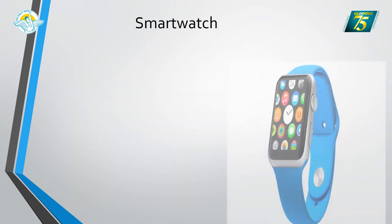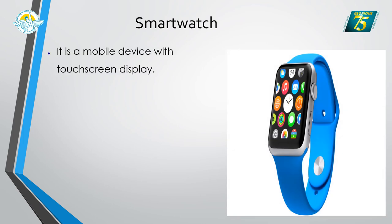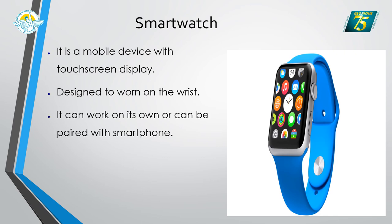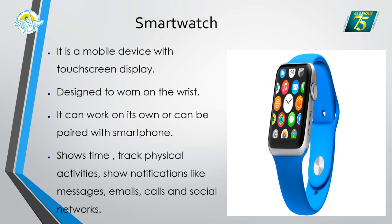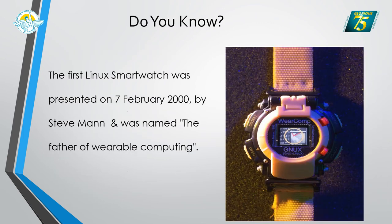Next is the smartwatch. It is a mobile device with a touchscreen display designed to be worn on the wrist. It can work on its own or be paired with a smartphone. It shows time, tracks physical activities, and shows notifications like emails, messages and calls — it is essentially a mini computer. The first smartwatch was created by Steve Mann, who is also known as the father of wearable computing.